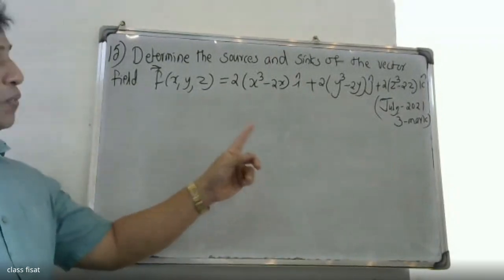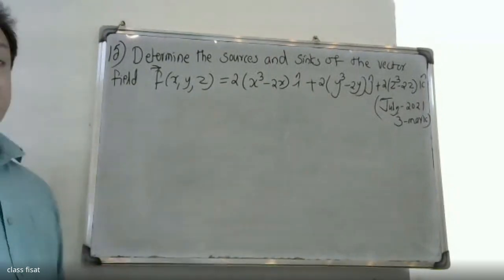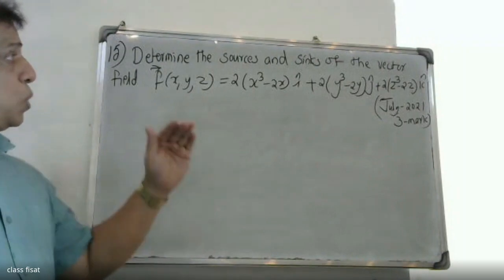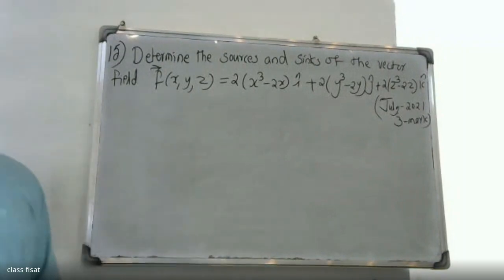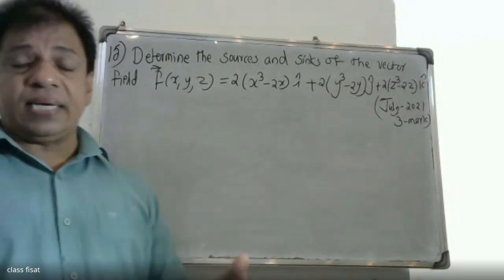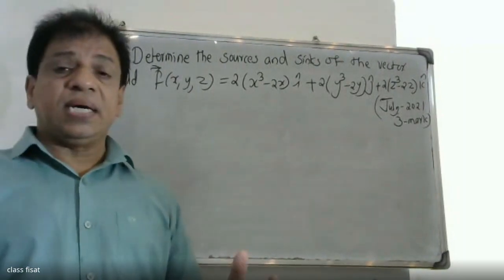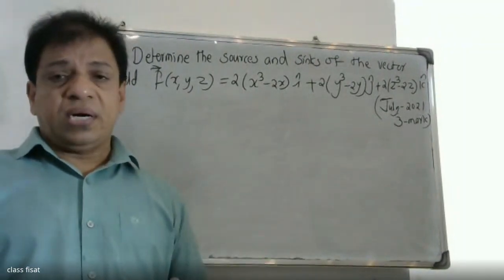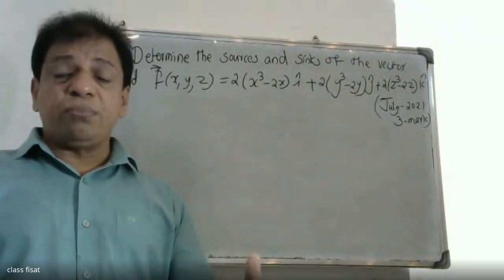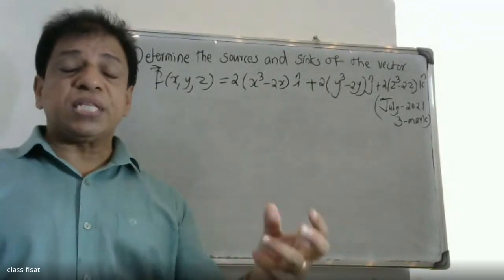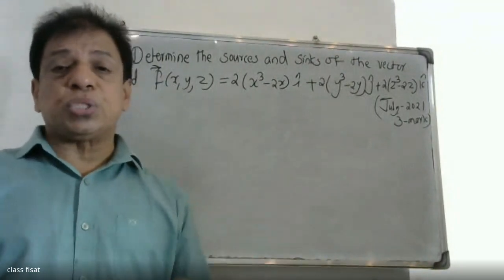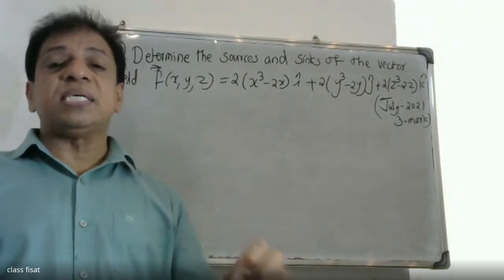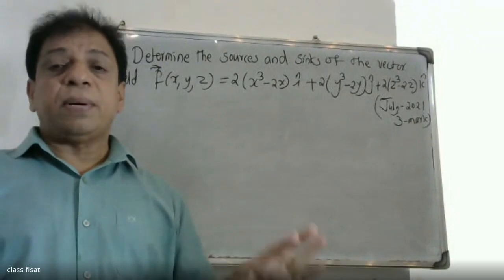This is the most important question. For sources and sinks, we use the divergence condition: del dot F greater than zero for a source, less than zero for a sink.